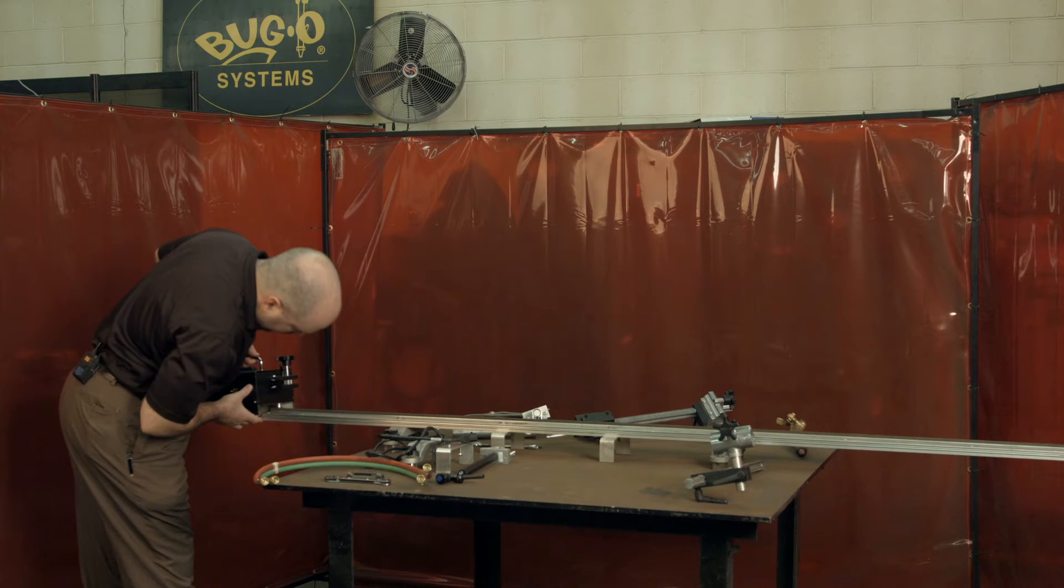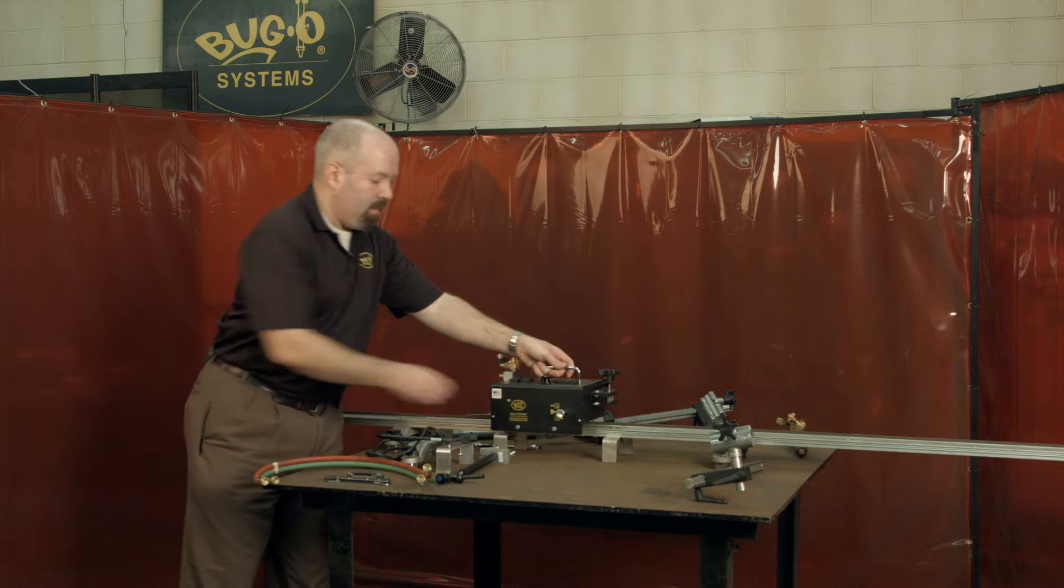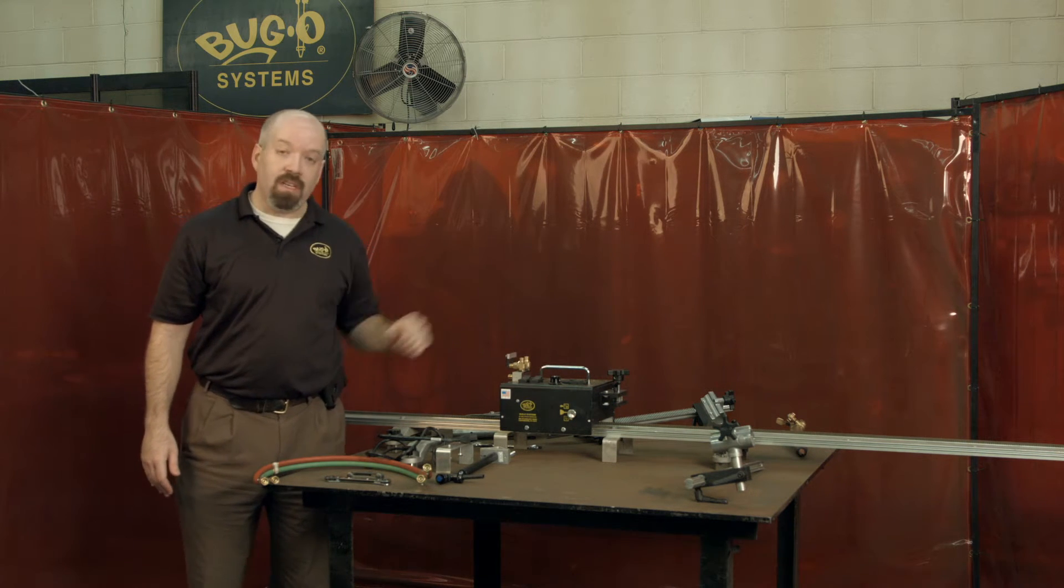When you have the clutch disengaged, you would simply slide it onto your rail and then you engage your clutch. Let's put the machine together and see how it works.